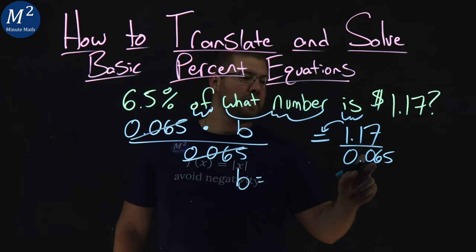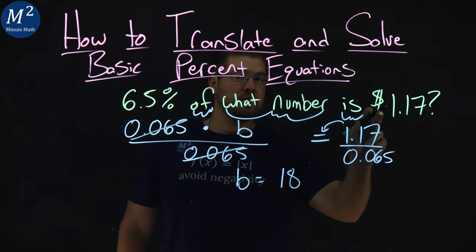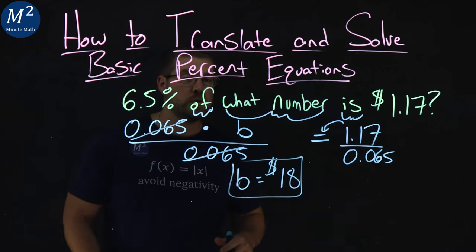1.17 divided by 0.065 is 18, and we're giving units of dollars, so let's put that on there. So my B value here is equal to $18.